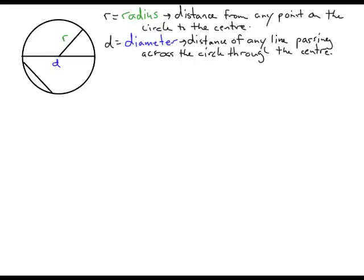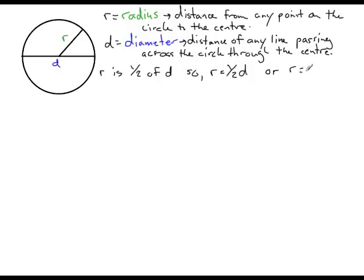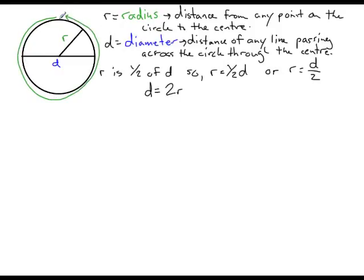Just so we're clear, this, for example, is not the diameter because it does not pass through the center. So the diameter of a circle must pass through the center of the circle. If we take a look at the radius, you might notice that the radius, or r, is one half of the diameter. So we can say that r equals one half d, or a different way to look at it: radius equals the diameter divided by 2. And if the radius equals the diameter divided by 2, we can also say that the diameter is going to be twice the radius — so diameter equals 2 times radius.